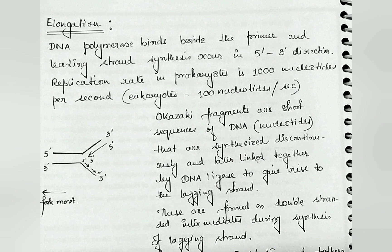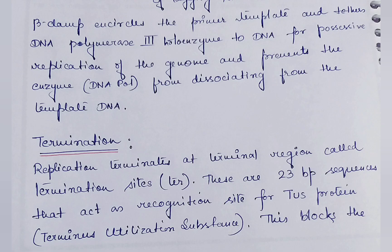The replication rate in prokaryotes is 1000 nucleotides per second, whereas in eukaryotes it is 100 nucleotides per second. In the lagging strand, Okazaki fragments are short sequences of DNA nucleotides synthesized discontinuously and later linked together by DNA ligase to give rise to the lagging strand. These are formed as double-stranded intermediates during lagging strand synthesis. The beta-clamp is a component of DNA polymerase that encircles the primer template and tethers DNA polymerase 3 holoenzyme to DNA for processive replication, preventing the enzyme from dissociating from the template.